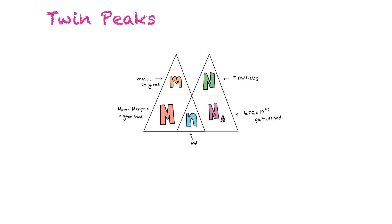That's the first thing you'll need to do. And once you know the moles, you can then multiply by Avogadro's constant to find the number of particles. So let's write those two steps down. Step one, you're going to go from the mass to the moles. The number of moles is equal to the mass divided by the molar mass.